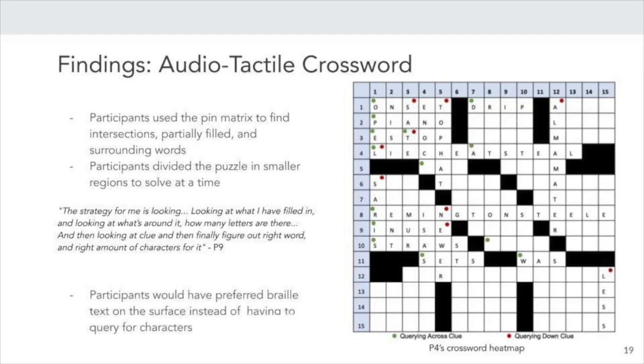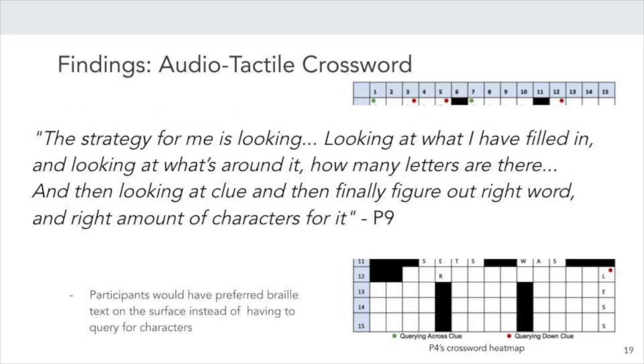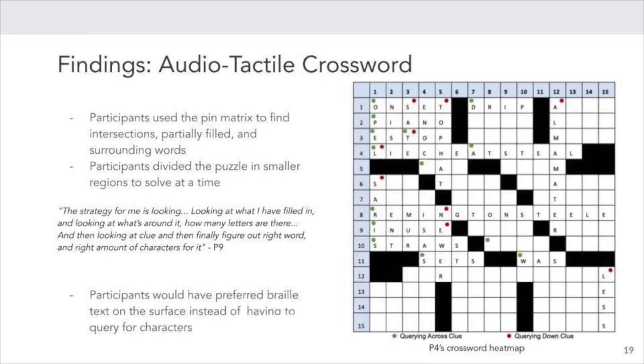From our participants that solved the audio tactile crossword, we learned that the tactile representation also served as a summary view to which they could refer to find intersections, partially filled words and surrounding words. They would then use this information when picking the next clue to solve in the puzzle. A quote from our participant number 9 is a great example for this. When asked about their preferred strategy for solving the puzzle, they say, The strategy for me is looking, looking at what I have filled in and looking at what's around it. How many letters are there? And then looking at the clue, then finally figure out the right word and right amount of characters for it.